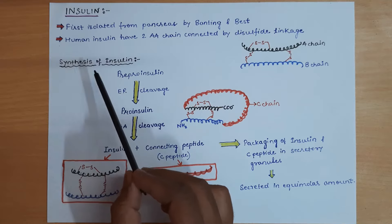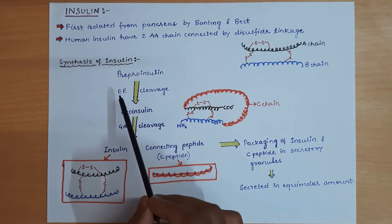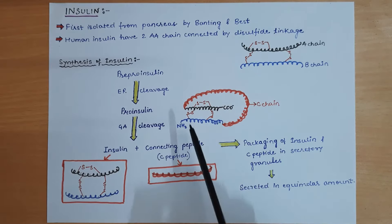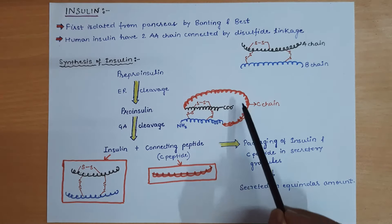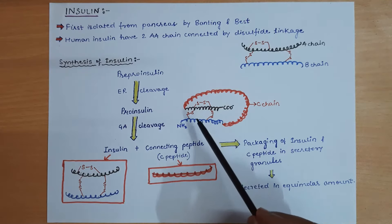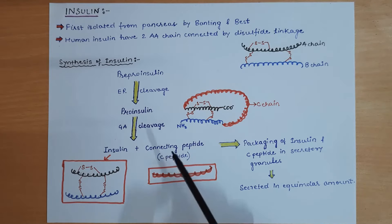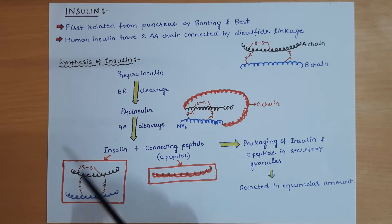Insulin is first synthesized in ribosomes in the form of pre-pro-insulin. This pre-pro-insulin undergoes cleavage in the endoplasmic reticulum to form pro-insulin. Pro-insulin contains an A chain, a B chain connected by disulfide bonds, and a connecting C chain. In the Golgi apparatus, pro-insulin is cleaved and the C chain is separated from the A and B chains.